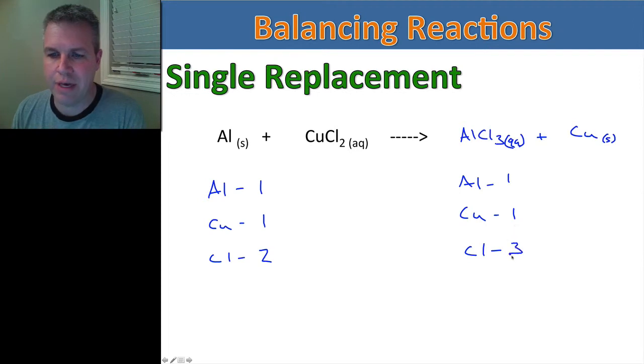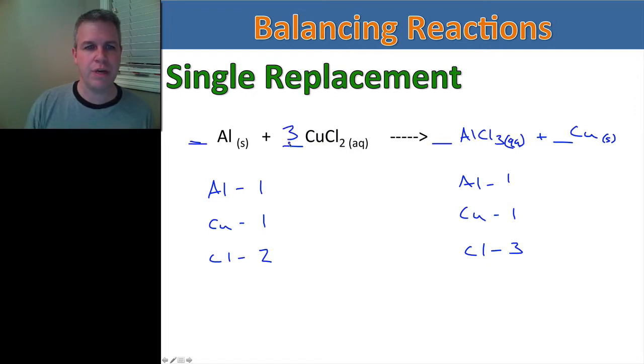So again let's write a space for our coefficients and start balancing from left to right. So aluminum, I have one aluminum, one aluminum, they're balanced. And let's continue. Copper, I have one copper here, another copper here, so far so good. Now I'm going to run into my chlorines and I know that these are unbalanced, two and three. So I need to look at the lowest common multiple of these two, which would be six.